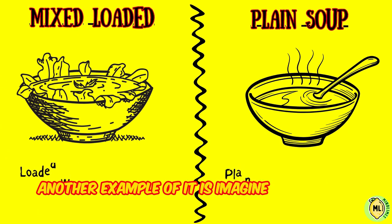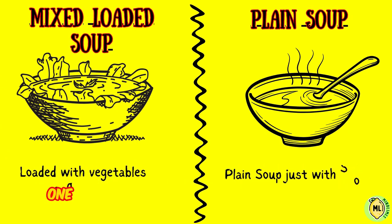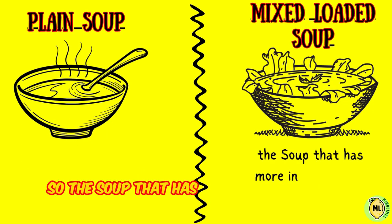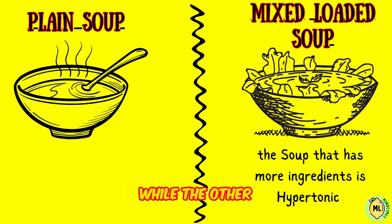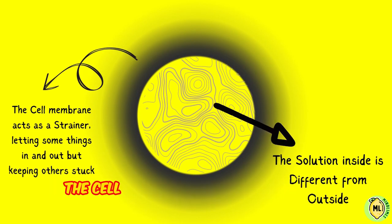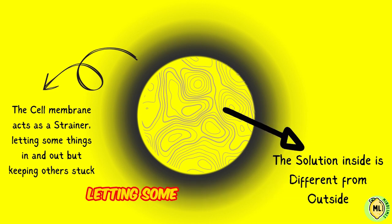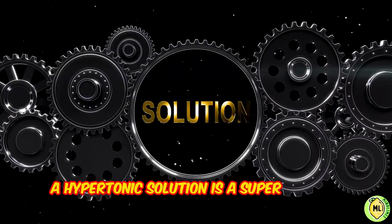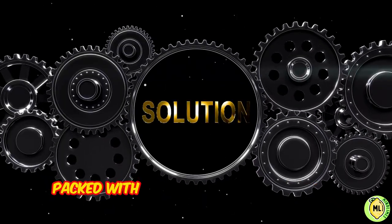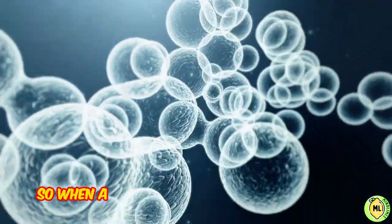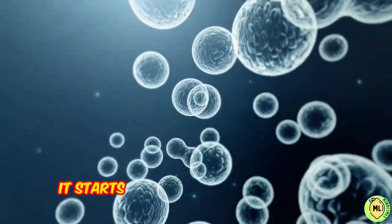Another example: imagine two bowls of soup, one with a lot of vegetables and noodles, and the other with just a few ingredients. The soup that has more ingredients is hypertonic, while the other with fewer ingredients is the other solution. In a cell's world, the soup inside is different from the one outside. The cell membrane acts like a fancy strainer, letting some things in and out but keeping others stuck. A hypertonic solution is a super-strong soup packed with more solutes, like salt and sugar, than the cell is used to. So when a cell takes a dip in this salty soup, it starts to shrink.